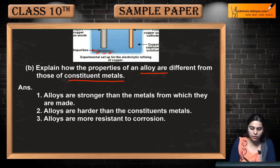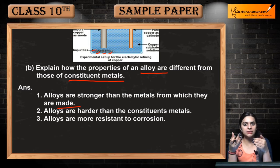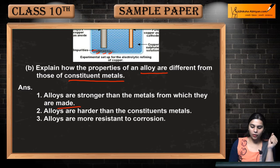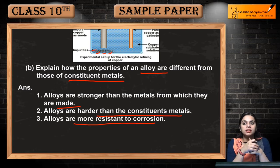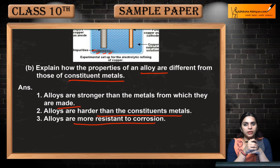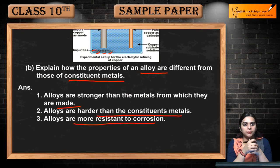Alloys are stronger than the metals from which they are made. Alloys are harder than the constituent metals. Alloys are more resistant to corrosion — wou easily corrode nahin ho sakti. Isliye alloying is also a method of prevention of rusting.